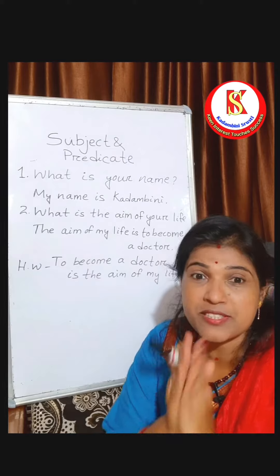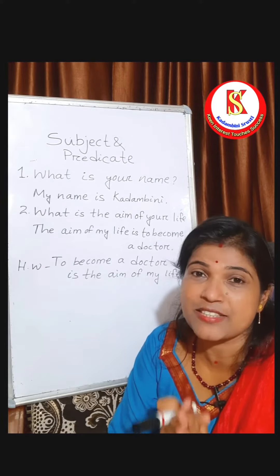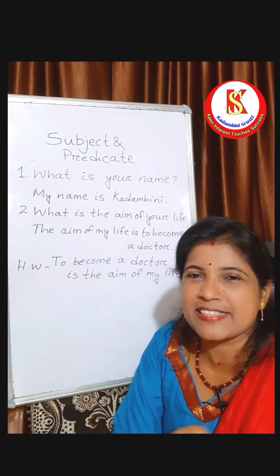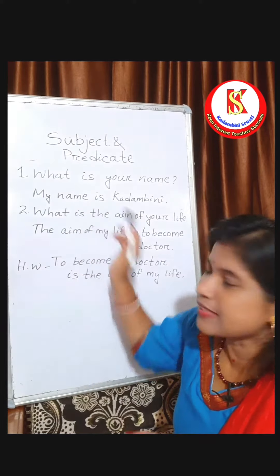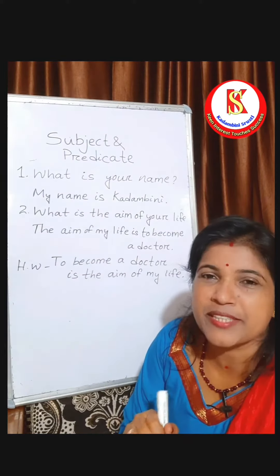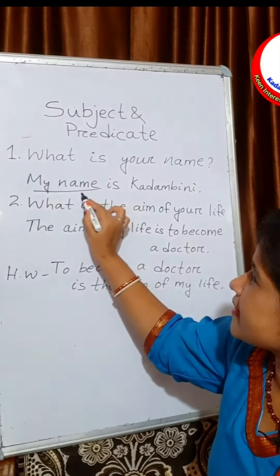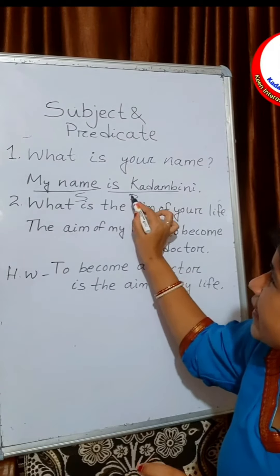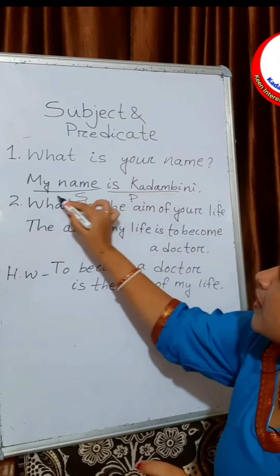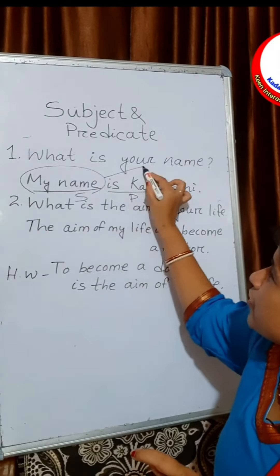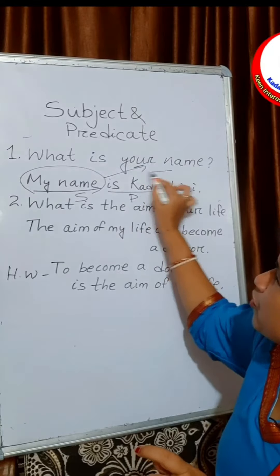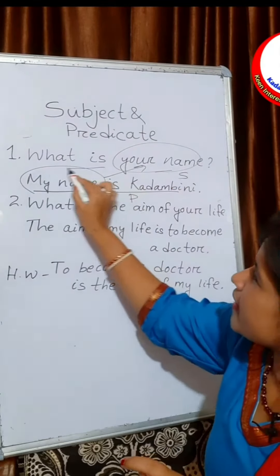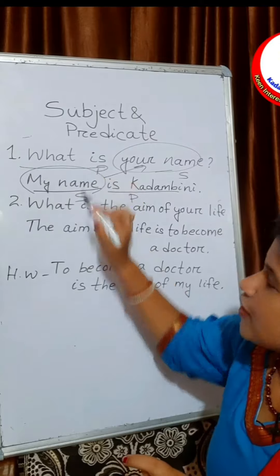When you have such sentences, first try to find out the answer. So the answer is: my name is Kadambini. Here, 'my name' is the subject and 'Kadambini' is the predicate. So 'my name' is equal to 'your name' — so 'your name' is the subject and 'what' is the predicate.